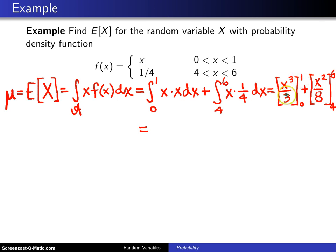For this first piece, when you plug in the 1, you get 1/3. When you plug in the 0, you get 0. Plus, for the second piece, when you plug in 6, you get 6 squared, which is 36 divided by 8, minus 16 divided by 8. That is 20/8, and 1/3 is in lowest terms. The 20/8 can be written as 5/2. The common denominator here is 6, this will be 2/6, this will be 15/6. 2/6 plus 15/6 is 17/6, and 17/6 is 2 and 5/6.